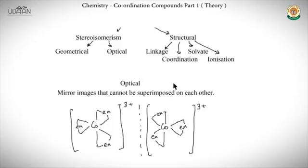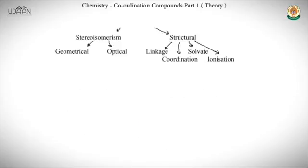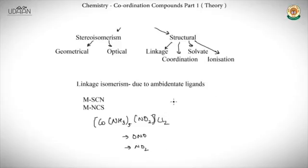Optical isomerism occurs when mirror images of a compound cannot be superimposed on each other. For instance, if two compounds are mirror images of each other, you cannot place one exactly on top of the other — they are non-superimposable mirror images. This is called optical isomerism.